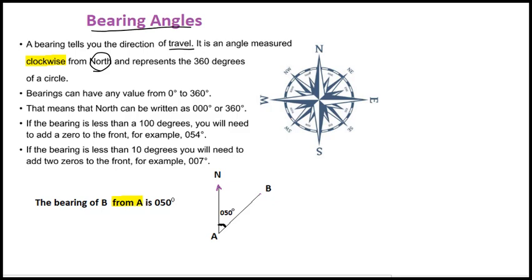So you have north over here. The bearing angle goes clockwise. For example, given the points over here, this will be the bearing angle. A bearing can have any value from 0 to 360 degrees.